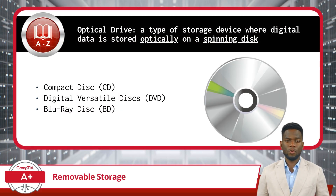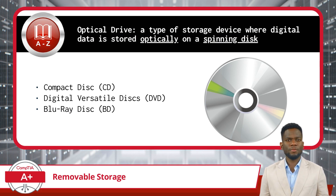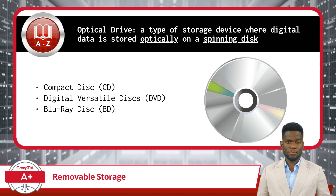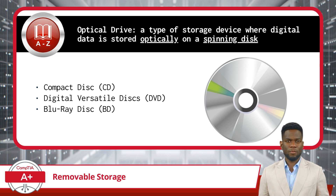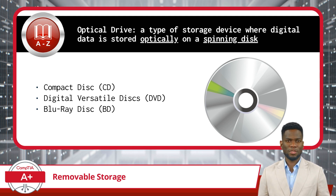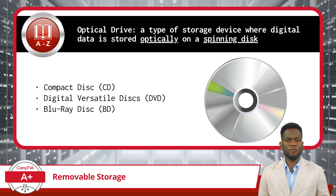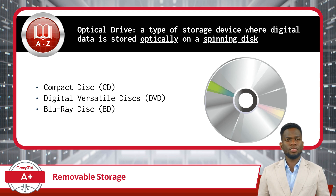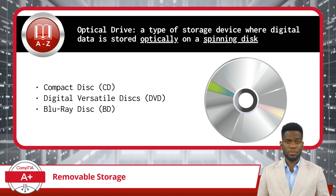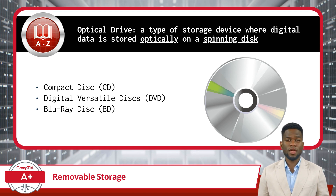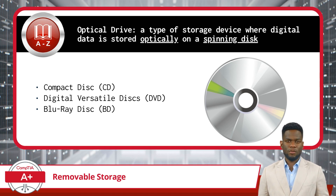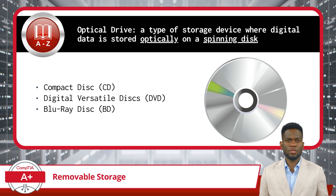Last up for our removable storage types, we have optical drives. An optical drive is a type of storage device where digital data is stored optically on a spinning disk. Optical drives are classified based on the type of optical disks they can read and write to. The three main types of optical disks are CDs or compact disks, DVDs or digital versatile disks, and Blu-ray disks. Optical drives consist of a tray or slot where you insert the disk. When you insert a disk, the drive uses a laser beam to read the data stored on the disk's surface. The laser scans the disk, reflecting off its surface, and the drive interprets the reflected signals as digital data.